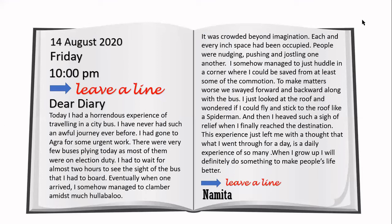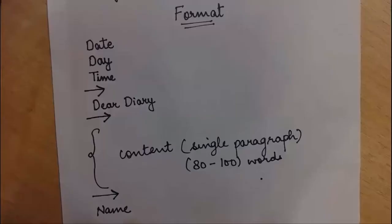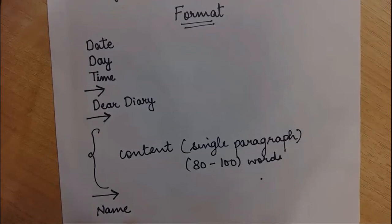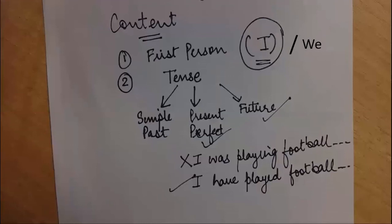And look at the concluding sentence: 'When I grow up, I will definitely do something to make people's lives better.' Leave a line and always end with your name — Namita. So that was the example. Now for the recap of the diary entry format: write the date, then the day, then the time. Leave a line, write 'Dear Diary' with a comma, leave a line, and then write your content in one paragraph of 80 to 100 words. The content will always be written from the first person narrative — 'I' — and the tense will be simple past, present perfect, or future tense.